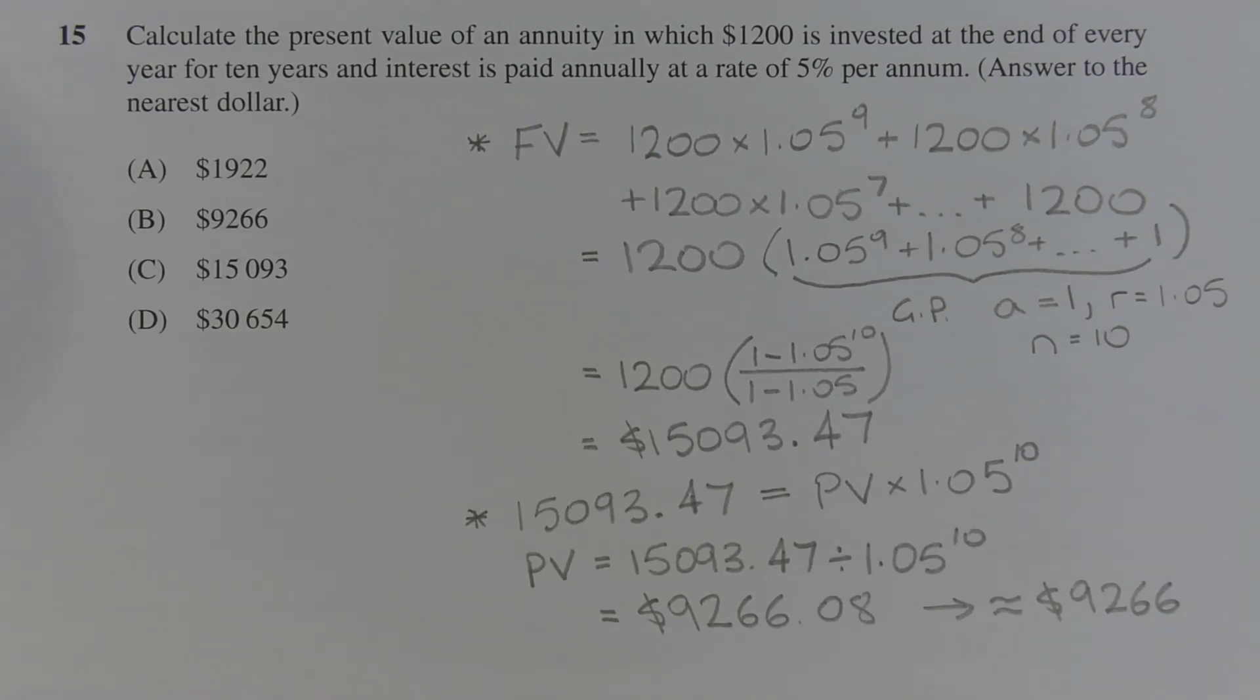The third contribution, its future value is 1,200 times 1.05 to the power of 7 and so on, right up to the 10th contribution, which is done at the end of the 10th year. But it'll attract no interest since it's immediately withdrawn. Now factorising out 1,200 from this expression, we get future value is equal to 1,200 times (1.05 to the power of 9 plus 1.05 to the power of 8 plus dot dot dot plus 1).